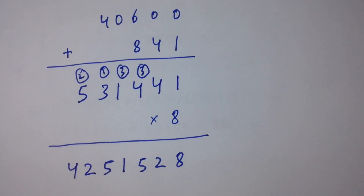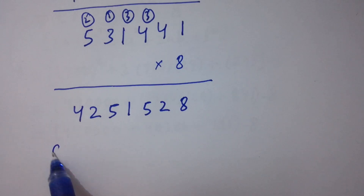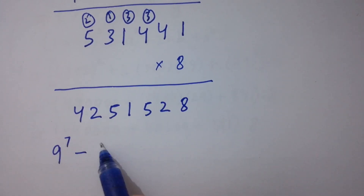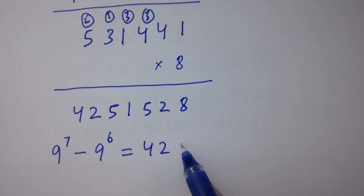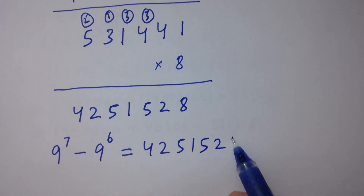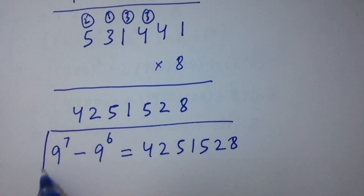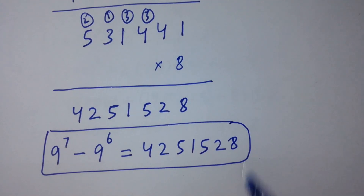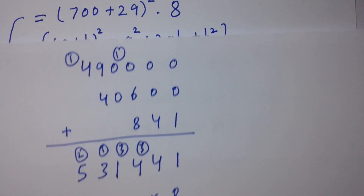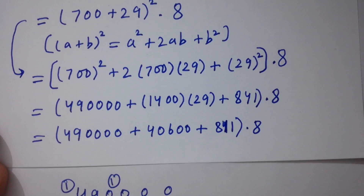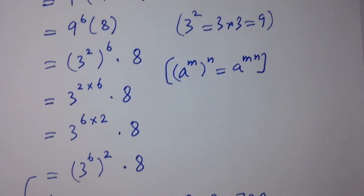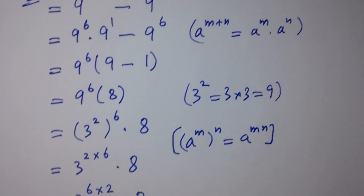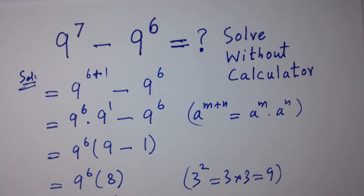So, 9 to the power 7 minus 9 to the power 6 equals 4251528. Finally, I solved this without any calculator. Thanks for watching this video, please subscribe to this channel to get notifications of my new videos, and don't forget to share these videos with your classmates and friends. You can also visit the playlist of this channel to learn more. Bye.